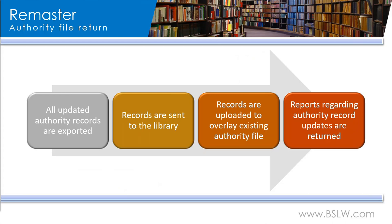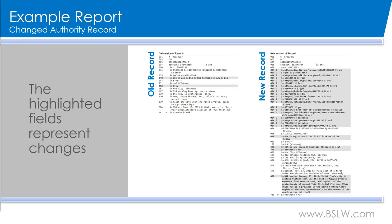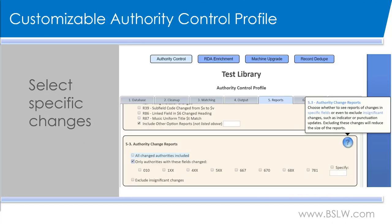Here's an example of a report for a changed authority record. All the highlighted fields represent the changes. On the right-hand side, you'll see that the new authority record contains multiple new 024 fields, new 3XX fields, and a new 670 field. You may be thinking that you don't have the time or staff to dedicate to sifting through the reports of all of these changes — so we do have a solution for you. We can limit what is actually written to this report. In your online profile, you can select that you want only changes in certain fields reported, as you can see in the checked option in section 5.3 of the profile.